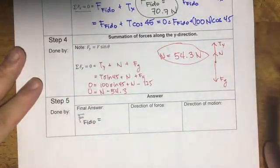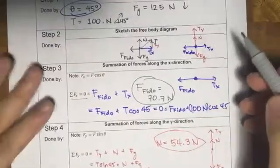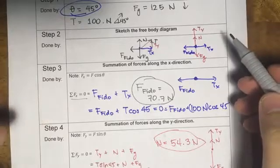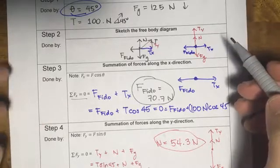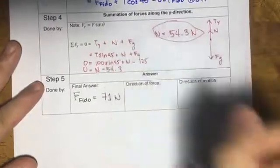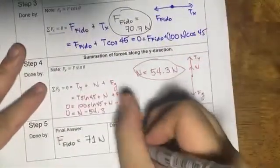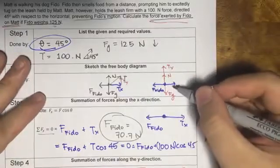70.7, but remember because it's an addition, then you will use the least precise. And by least precise, our least precise is the ones digit, so F of Fido is then 71 newtons. What direction is it going? In our diagram, it's going to the left. However, it's very much okay to also go to the right if you oriented it in such a way that the leash is going like this.